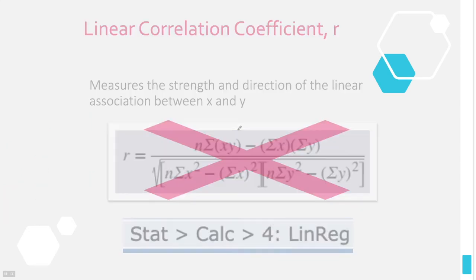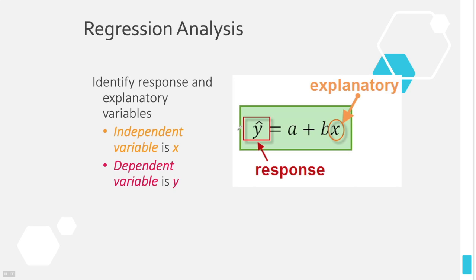The explanatory variable is considered the independent variable — it stands by itself. You determine it without consulting anything else; you decide what you want X to be and plug it in, and then it gives you what Y is. Y is therefore the dependent variable. The explanatory variable is always independent and the response variable is always dependent.